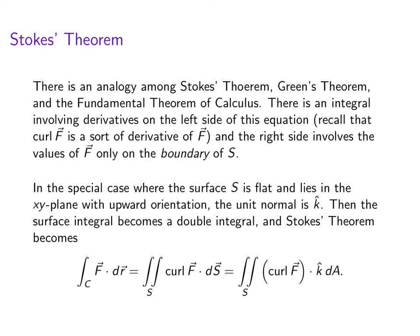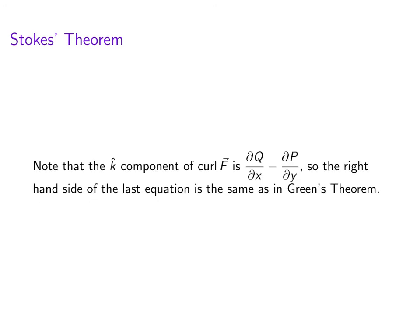Remember that the k component of the curl of F is just ∂Q/∂x - ∂P/∂y, and so then what you'd get on the right-hand side is just what you get in Green's theorem. So all that serves to illustrate that Stokes' theorem is a higher-dimensional analog of Green's theorem. It's really doing the exact same thing.